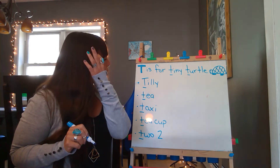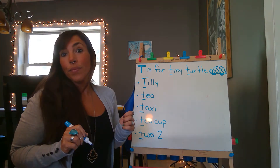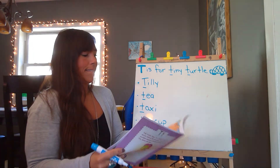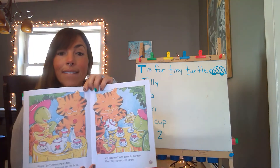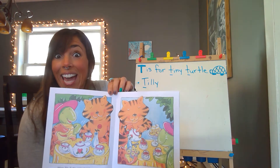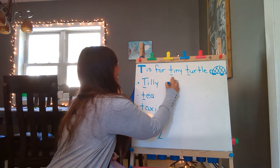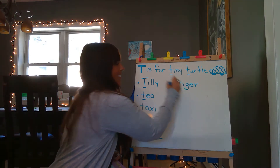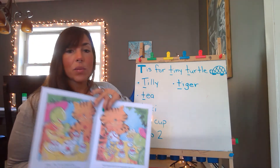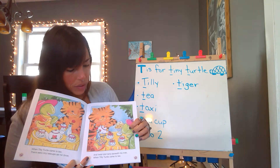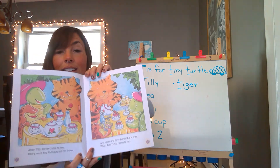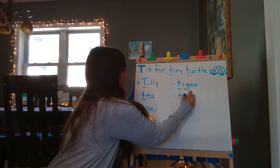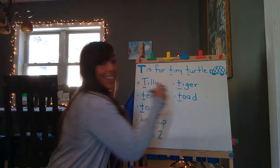So there were two other animals. Do you remember who they were? Was there a tiger? T-I-G-E-R. Tiger. And then there was this other guy here too — who's this? Toad. T-O-A-D. Toad. Awesome.